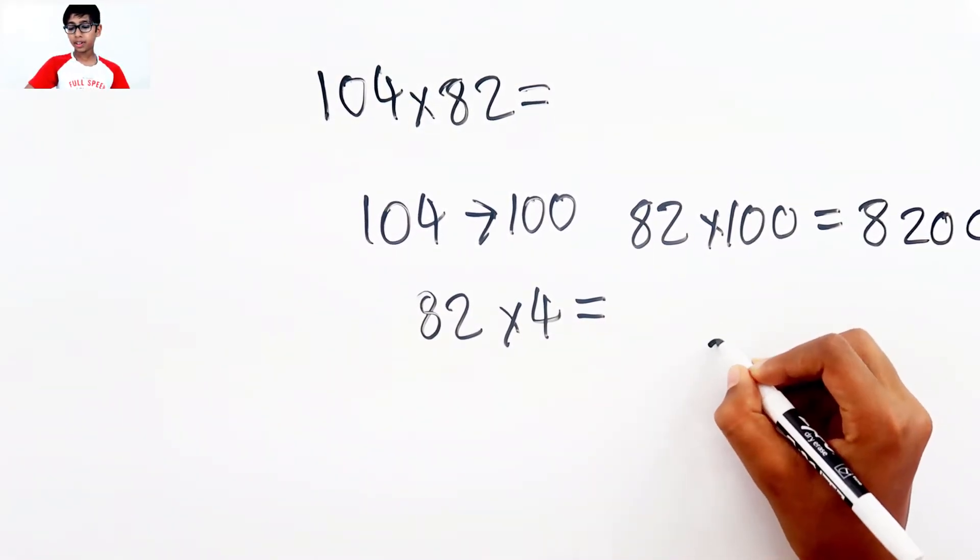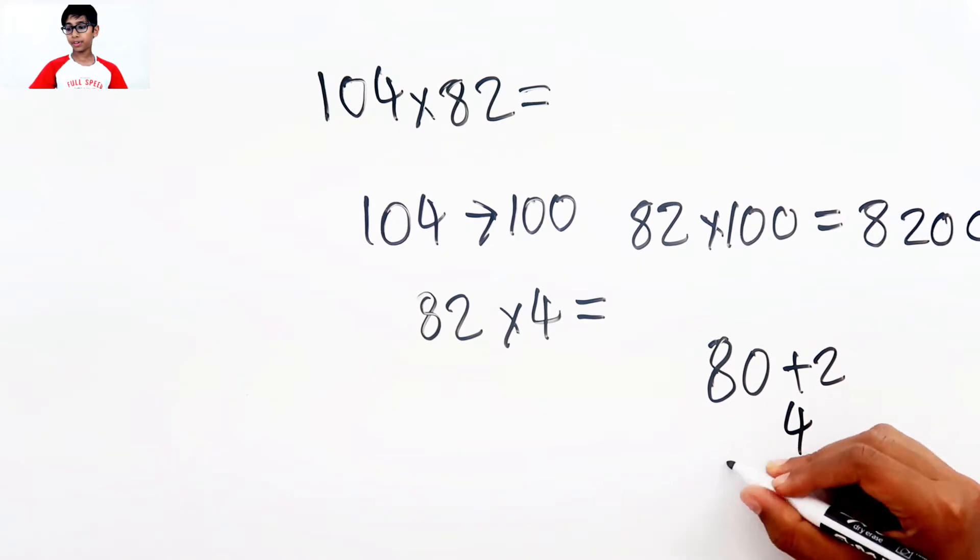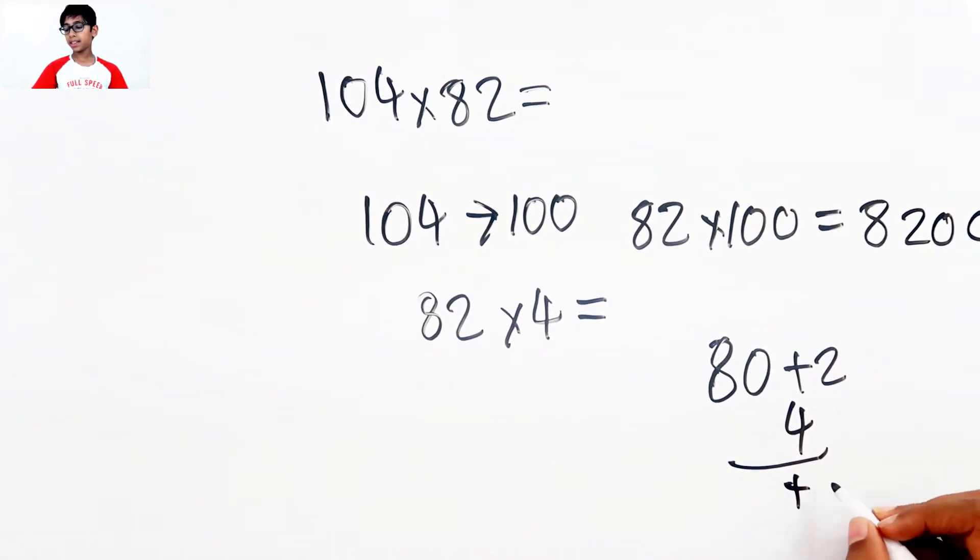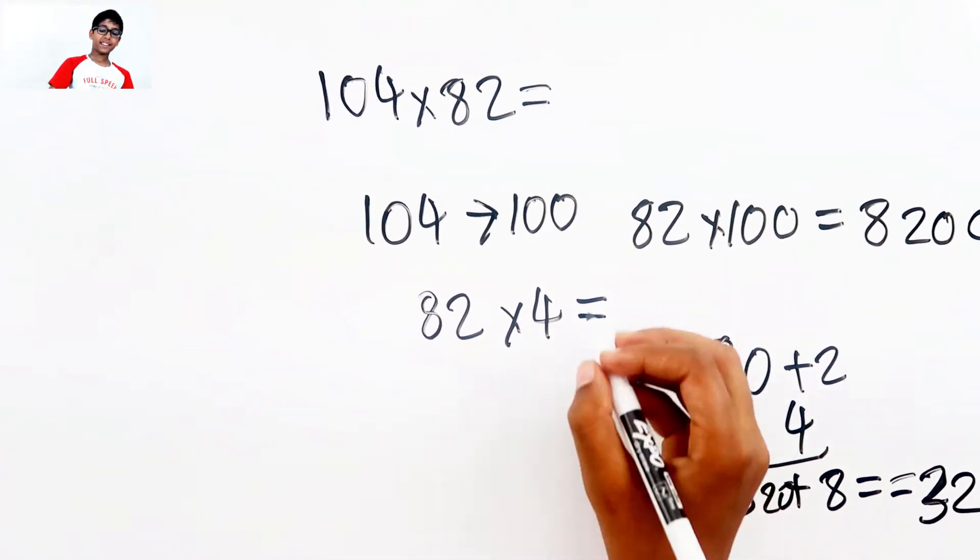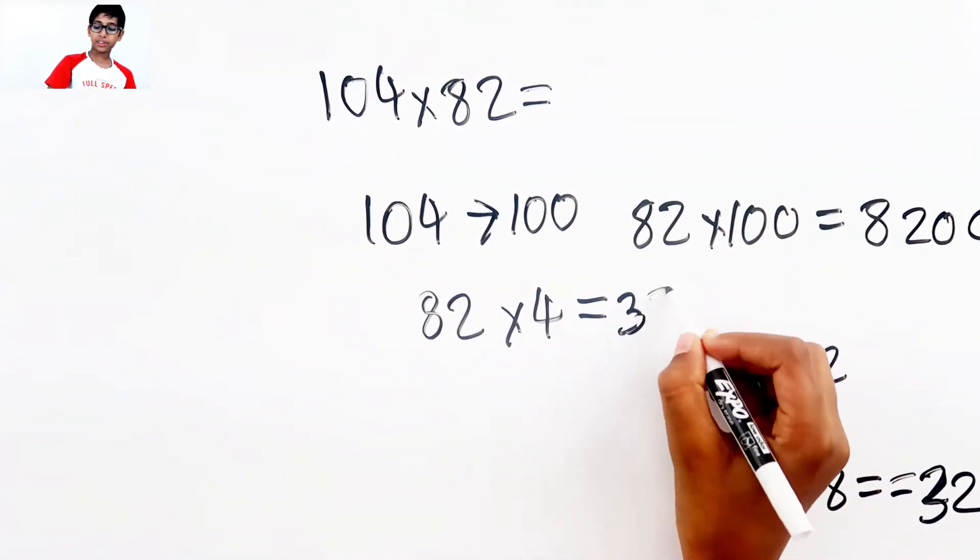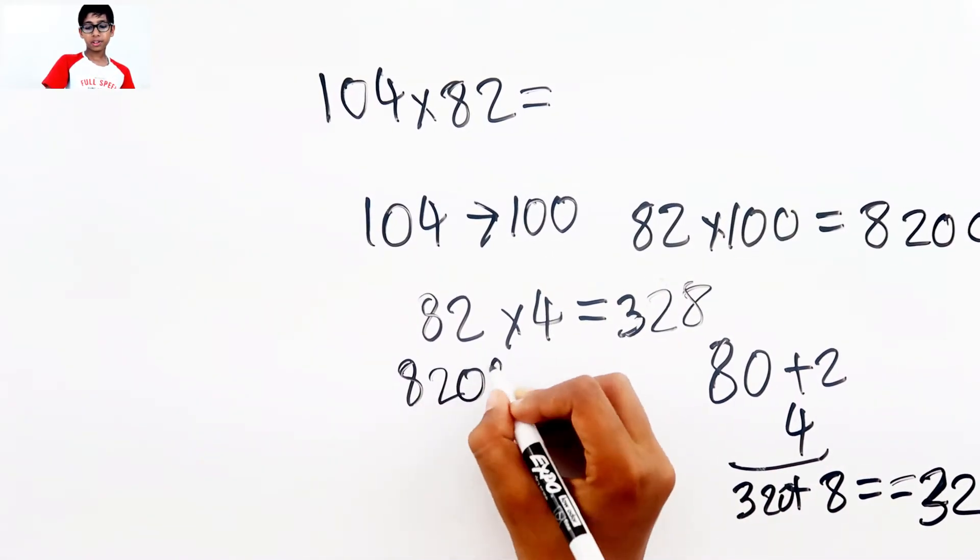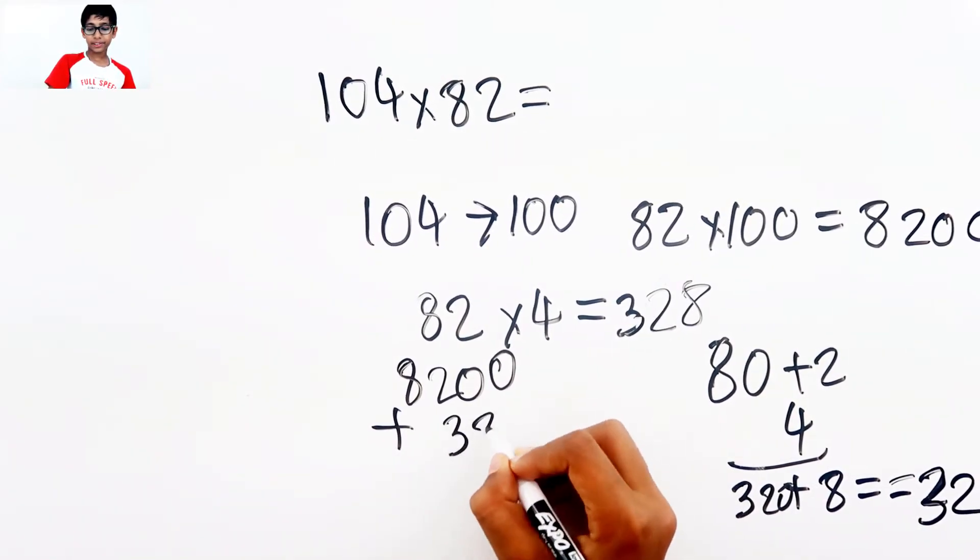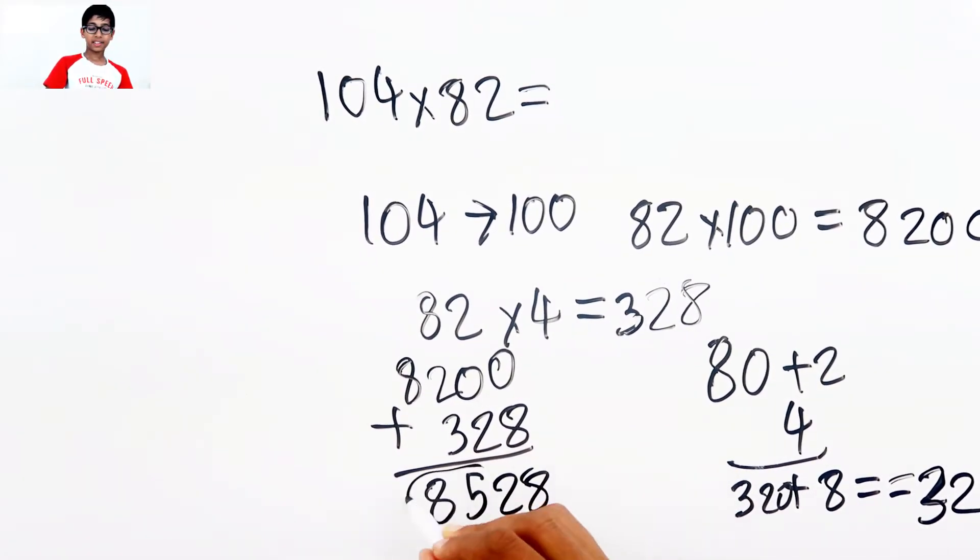8,200. Now there's a 4 here so we need to do 82 times 4. This is gonna be a little hard. So 80 plus 2 and 4 here, plus the 2 times 4 equals 8, and then 8 times 4 equals 32. So 320 and 328. So 8,200 plus 328 is 8,528. This is the answer.